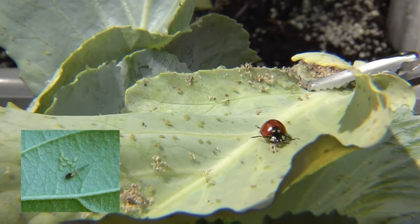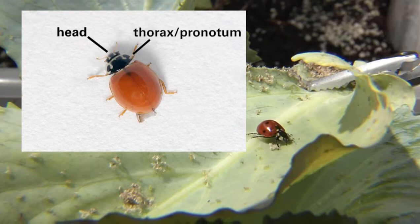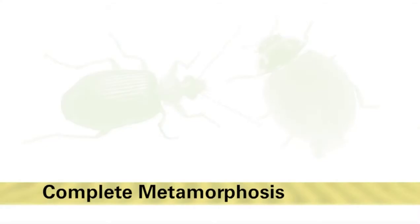Lady beetle adults have three body segments: a head, a thorax which is covered by a plate called the pronotum, and the abdomen. All beetles, including lady beetles, have two pairs of wings. The outer set of wings are hard protective covers called elytra. These wing covers protect a second set of wings that are thin and clear. Beetles exhibit complete metamorphosis, which means they have four life stages: egg, larvae, pupae, and adult.